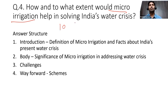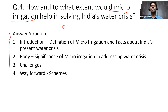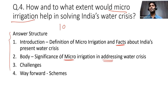This is a 10-marks question, so two pages. We have to construct a proper answer structure: introduction, main body, and conclusion. In the introduction, first define what micro irrigation is and give facts related to the present water crisis. In the main body, justify how micro irrigation addresses India's water crisis. Then discuss the challenges in adopting micro irrigation, and in the conclusion give the way forward.